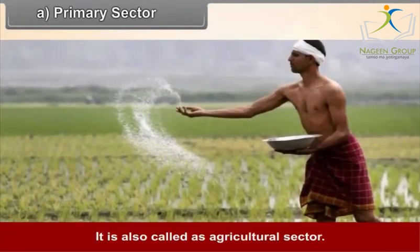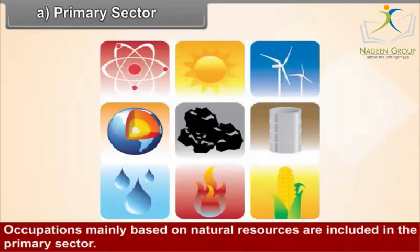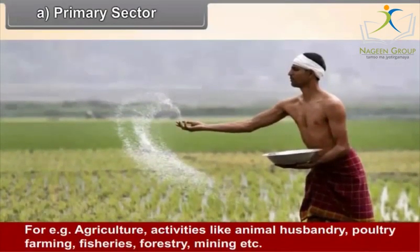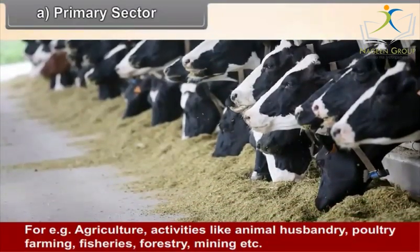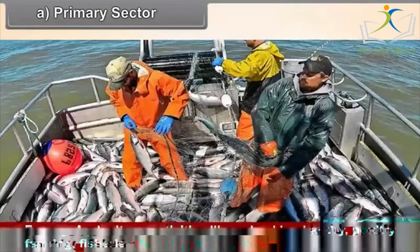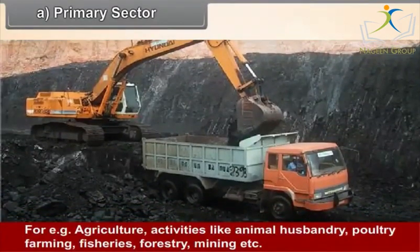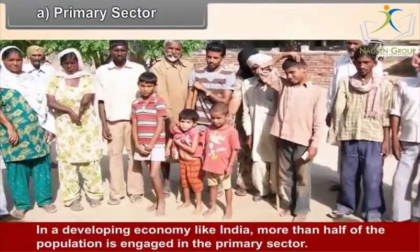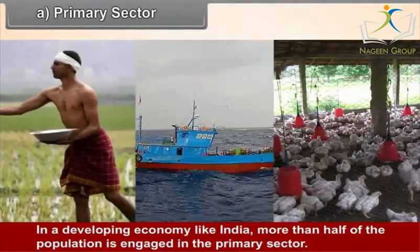A. Primary sector. It is also called the agricultural sector. Occupations mainly based on natural resources are included in the primary sector. For example, agriculture, animal husbandry, poultry farming, fisheries, forestry, mining, etc. In a developing economy like India, more than half of the population is engaged in the primary sector.